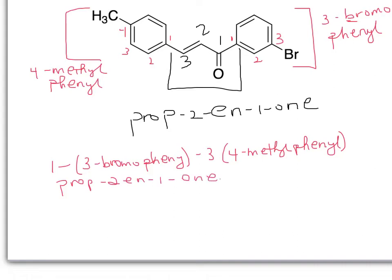And again, keeping in mind that this particular double bond here, whether it's an E or Z configuration, and this is the E configuration, which is the same as kind of like trans, so we would like to put an E at the front here before we put our name. So then it will be E, one, three-bromophenyl, three, four-methylphenyl, prop-2-ene-1-one.